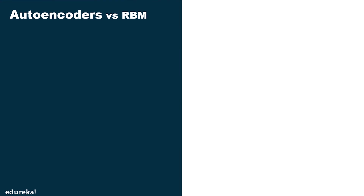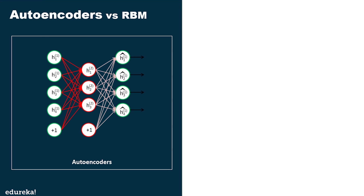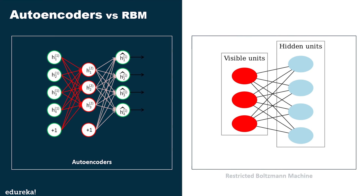Autoencoders are simple three-layer neural networks where output units are directly connected back to input units. Typically the number of hidden units is much less than the number of visible ones. RBMs share a similar idea, but use a stochastic approach instead of deterministic, using stochastic units with a particular distribution. RBMs have two biases, which distinguishes them from autoencoders. The hidden bias helps the RBM produce activations on the forward pass, while the visible layer biases help the RBM learn the reconstructions on the backward pass.